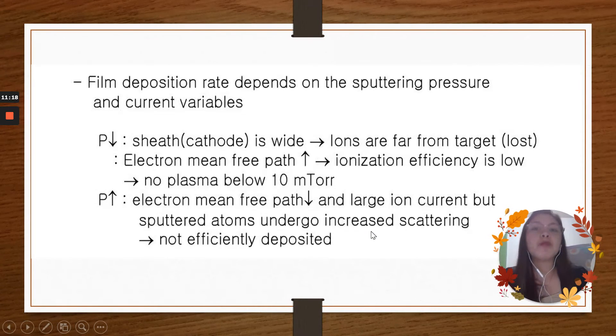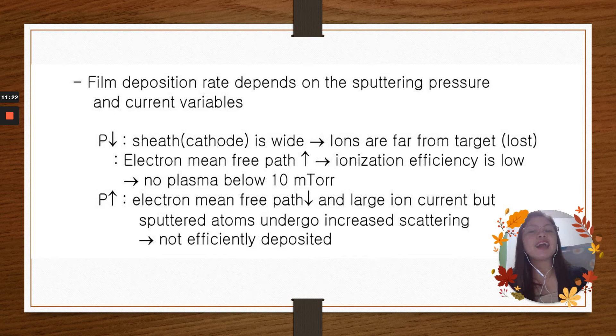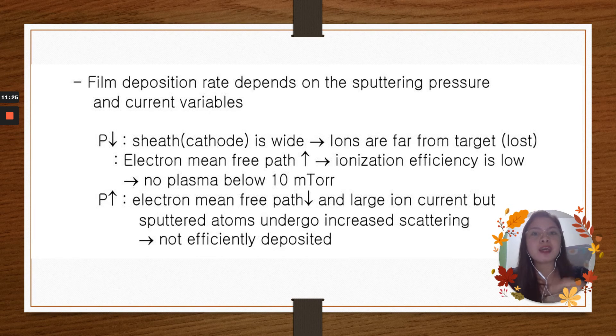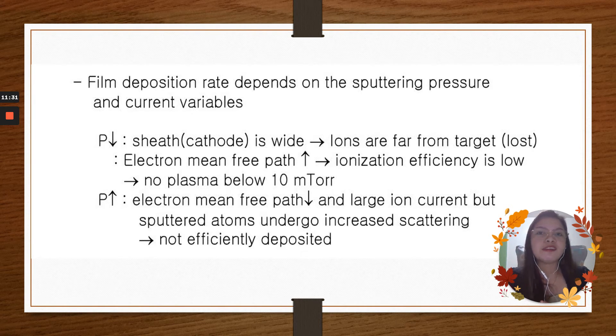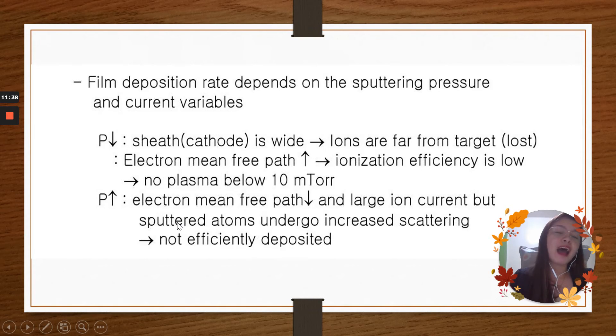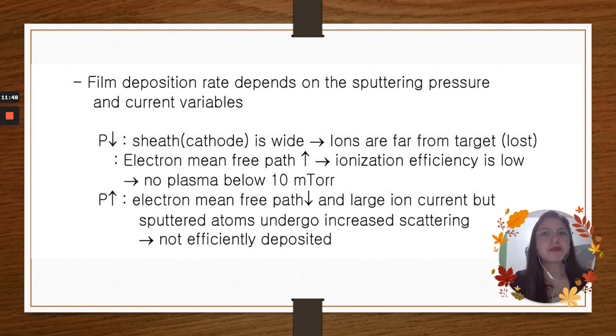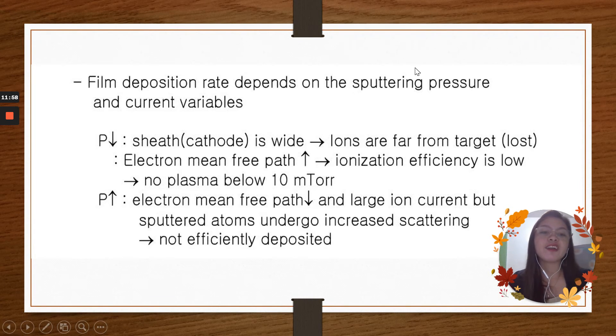We have also the film deposition rate depends on the sputtering pressure and current variables. When our P goes down or downwards, sheath at cathode is wide. This means ions are far from target or lost and we have also the electron mean free path upward, ionization efficiency is low or no plasma below 10 millitorr. When our P is going upward, this means electron mean free path downward and large ion current. That's sputtered atoms undergo increased sputtering, then this is not efficiently deposited.